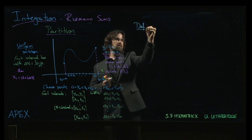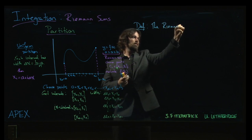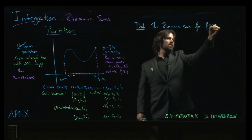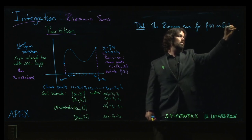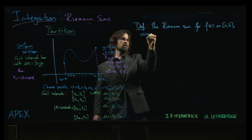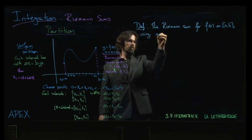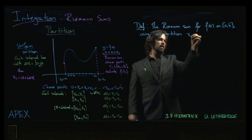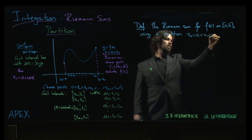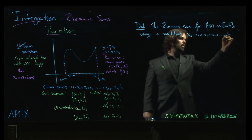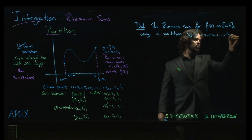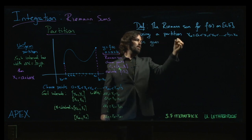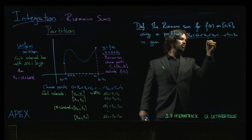So we can define that. So the Riemann sum for f of x on a, b using a partition, say, x0 equal to a, less than x1, less than x2, and so on down to b, which will be our xn,